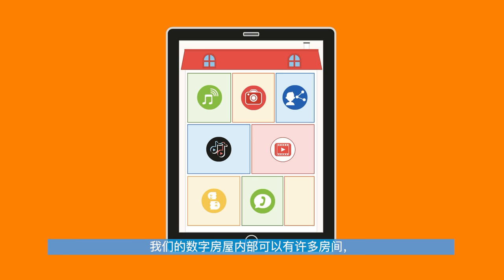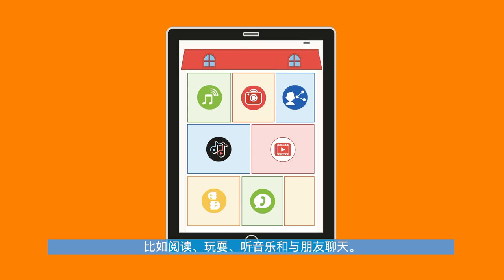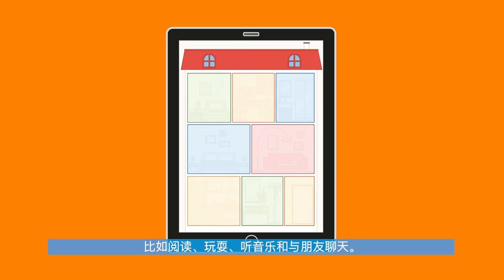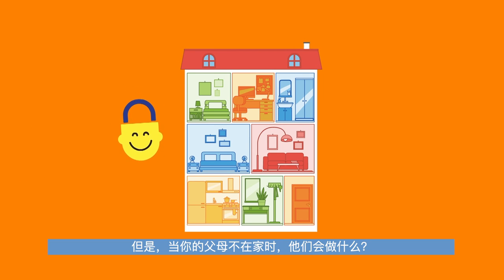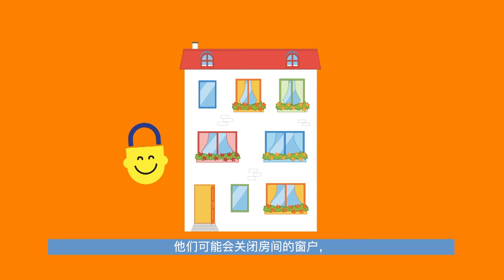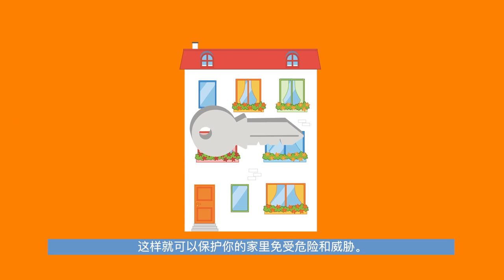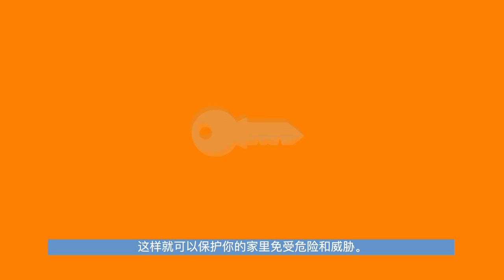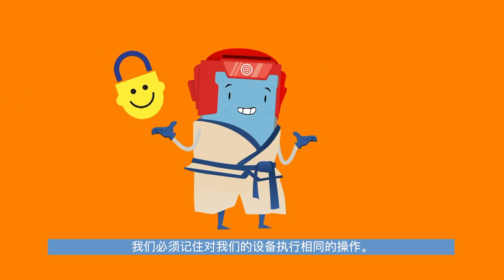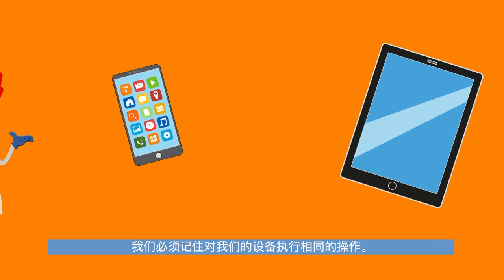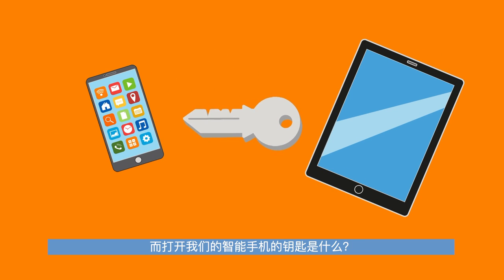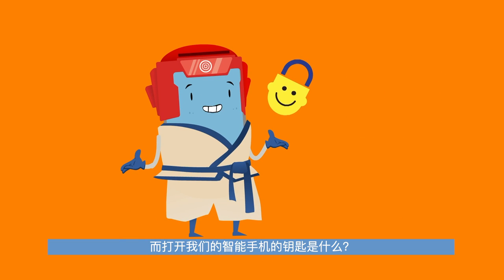Our digital house can have many rooms inside it where we can do a lot of fun things like reading, playing, listening to music and talking to our friends. But what do your parents do when they're not at home? They'll probably close the windows in the rooms and lock the door of the house with a key so that your home can be protected from dangers and threats. We have to remember to do the same thing with our devices. And what is the key to our smartphone? A password.